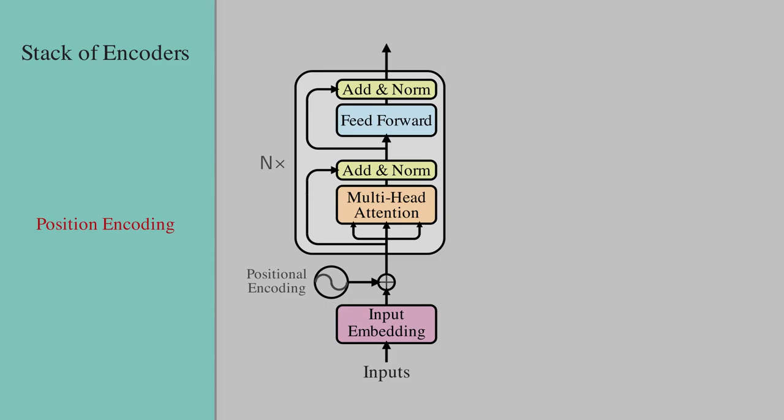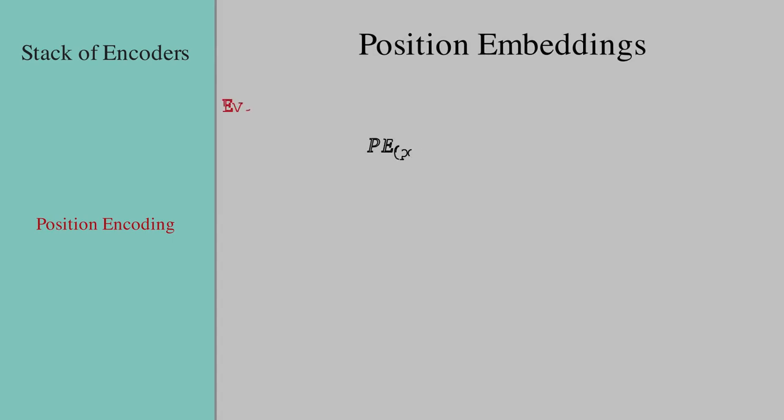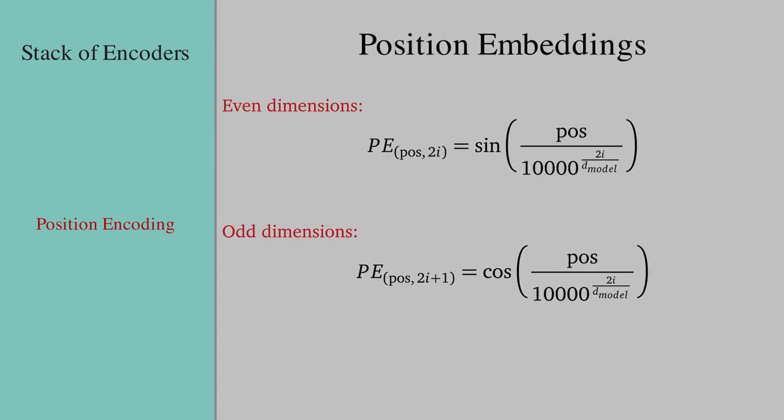Next, we have position encoding. Because transformer does not use any RNN or CNN components, we somehow need to provide the position information of each input token to the model. These position encodings are basically a sequence of embeddings where each element in the sequence has the same dimensionality as the token embedding vectors. Position embeddings are computed using the sine and cosine functions as shown here, for different odd and even dimensions.